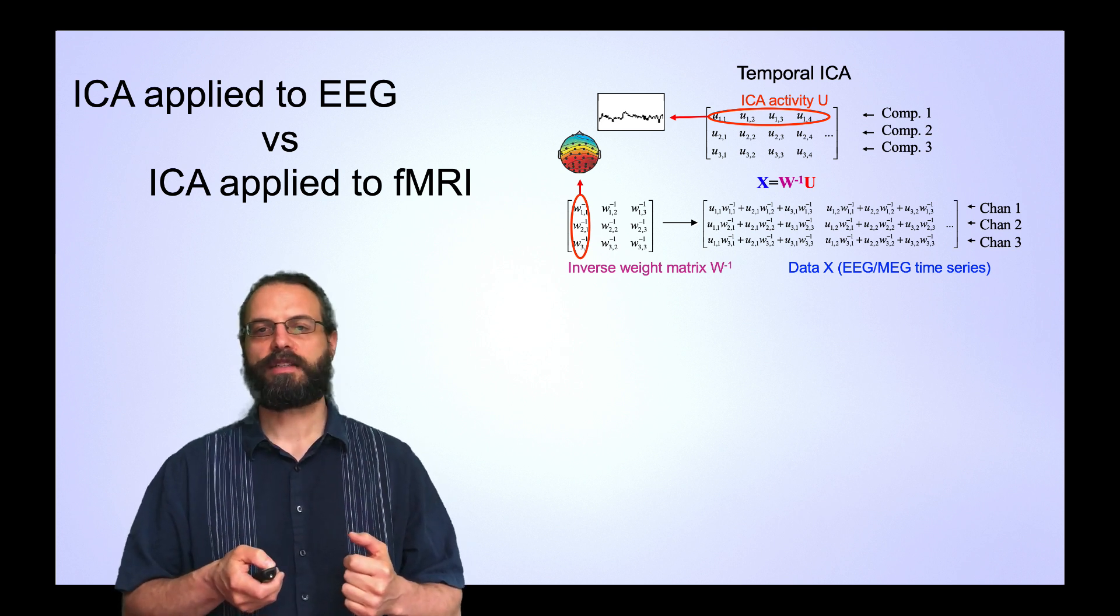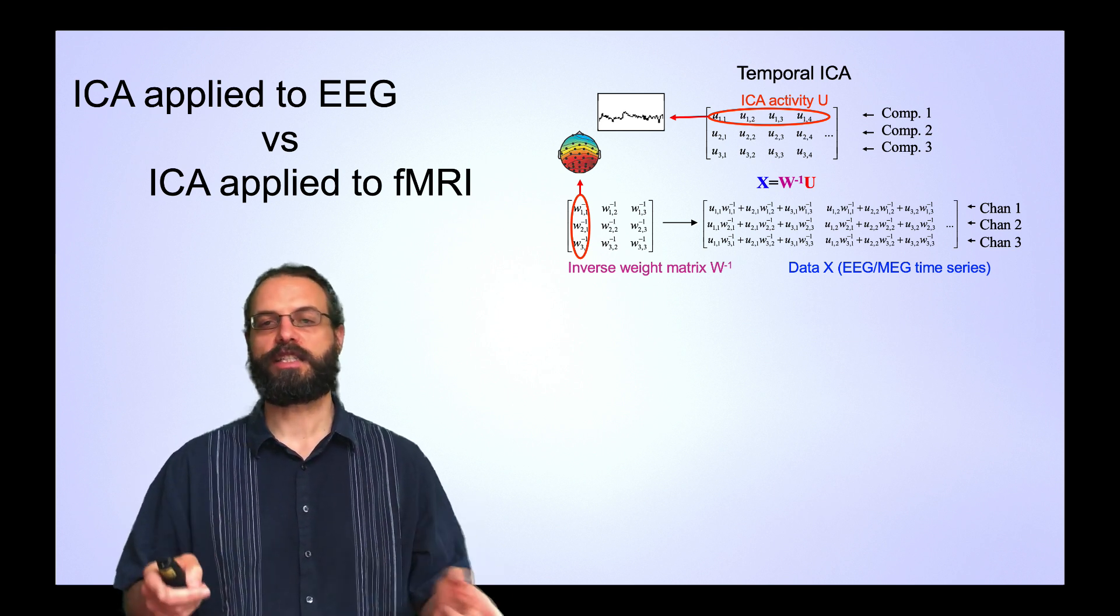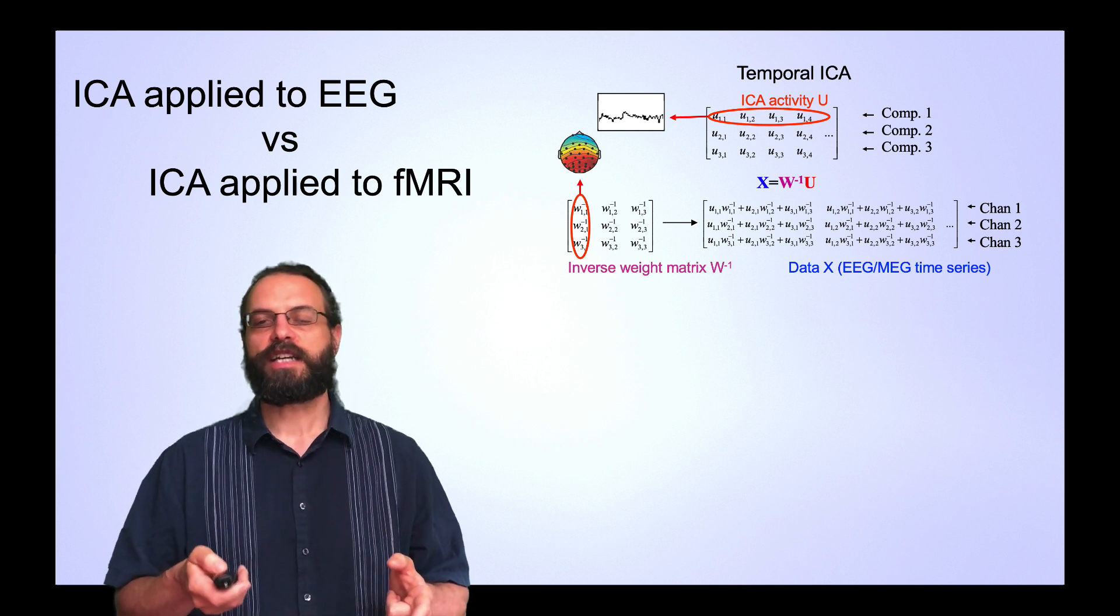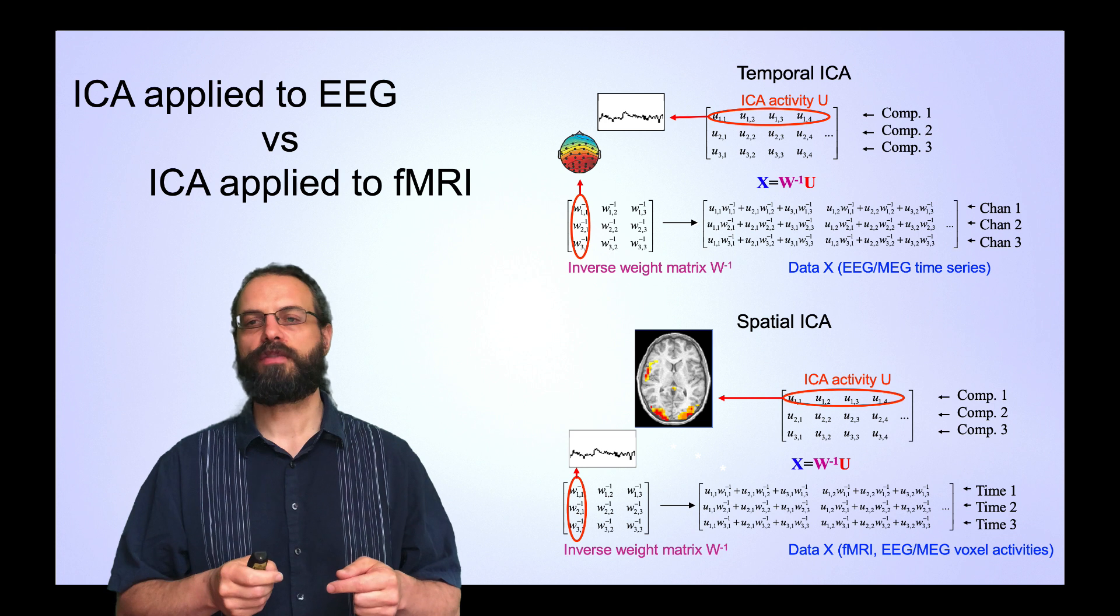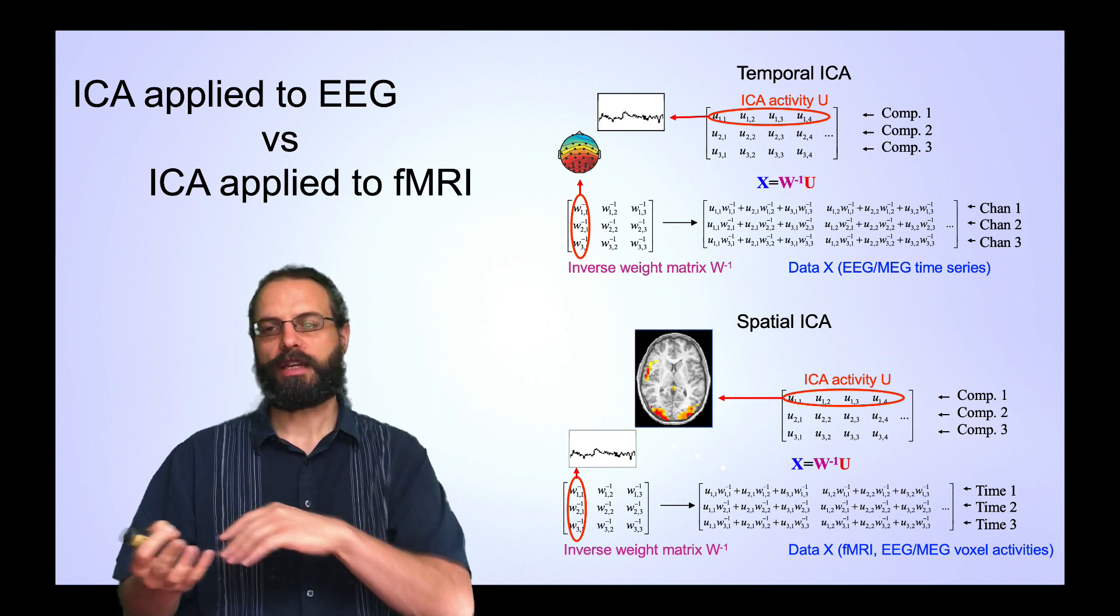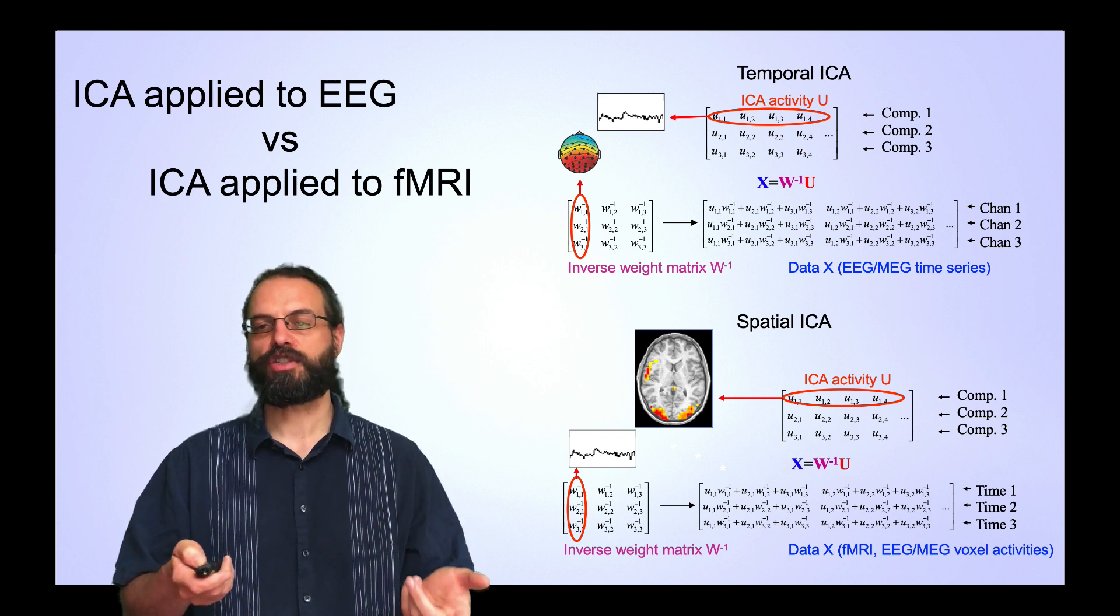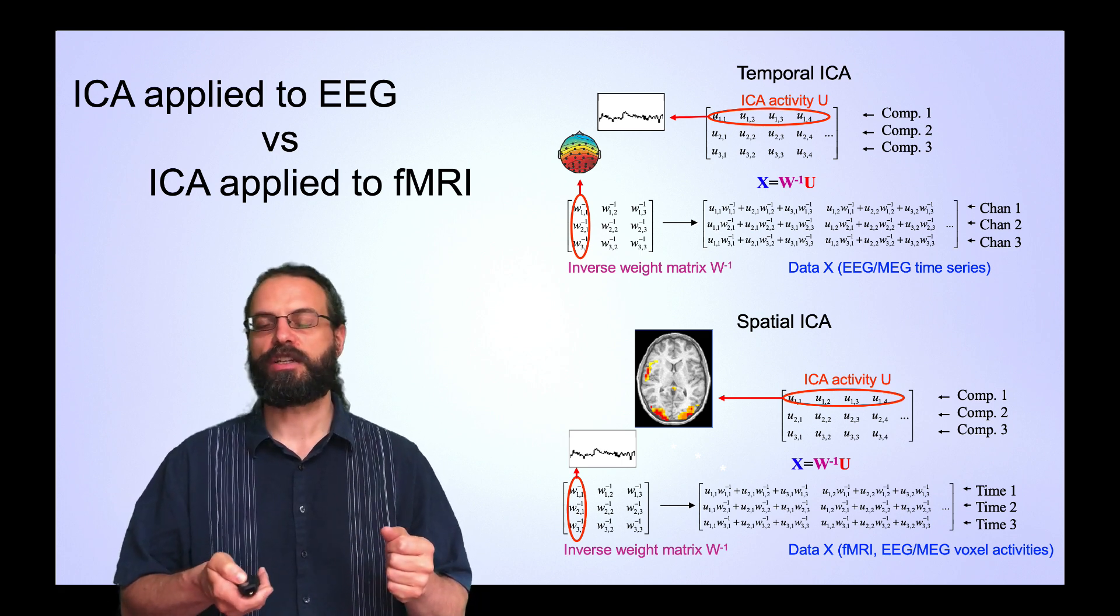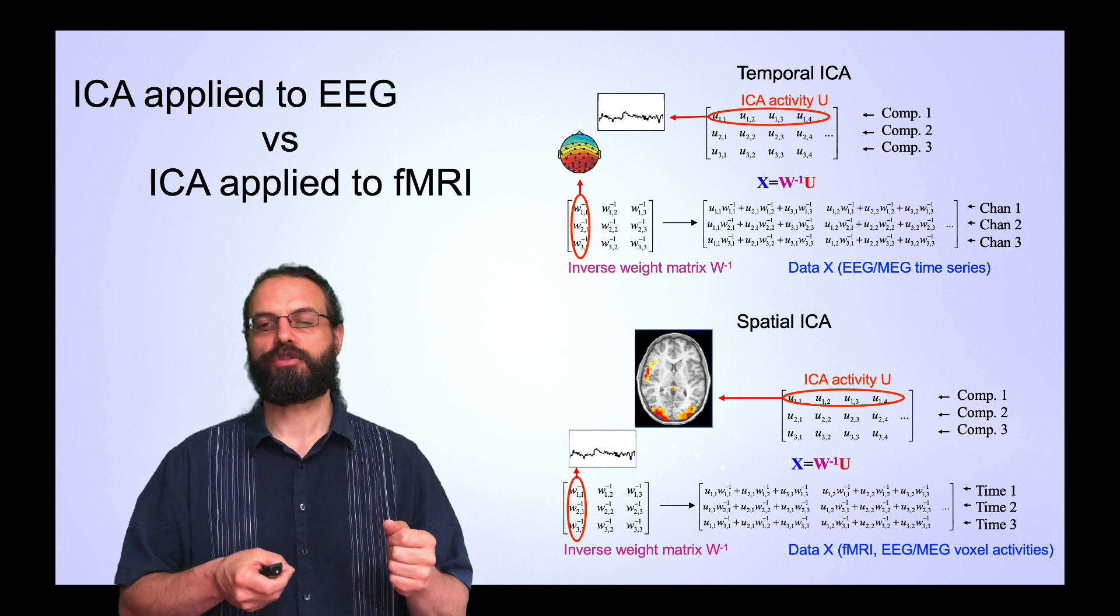Here's the difference of applying ICA to EEG versus applying ICA to fMRI. When you look at EEG, the ICA activities are the time courses of the components, and the columns of the inverse weight matrix are the scalp topographies. When you look at fMRI, it's applied in spatial domain because you have many voxels and very few time points. Now the ICA activities are actually spatial 3D volumes of fMRI activation, and the inverse weight matrix are the time courses of the components.